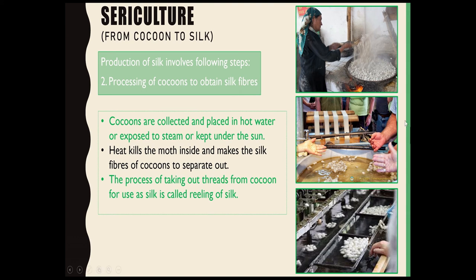As you can see in the first picture, a woman is boiling the cocoons in hot water. Boiling the cocoons in hot water is the most commonly used method for killing the silk moth inside and for taking out the silk fibers. After that, reeling is done.